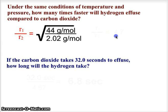This value comes out to R1 over R2 has a ratio of 4.7. So if the carbon dioxide takes 32 seconds to effuse, how long will it take the hydrogen? Well, the hydrogen is the lighter gas. So when we look at this calculation, we need to take the 32.0 seconds and divide it by 4.7, the ratio of change.